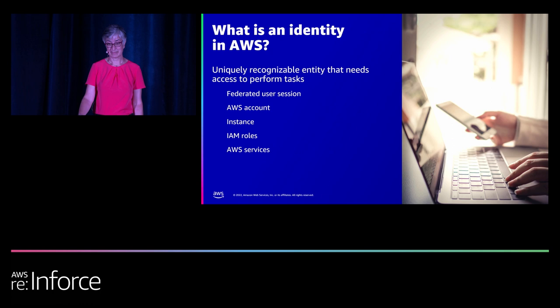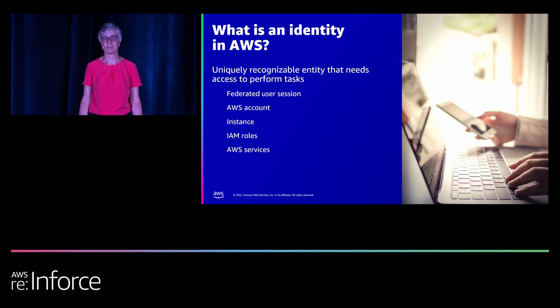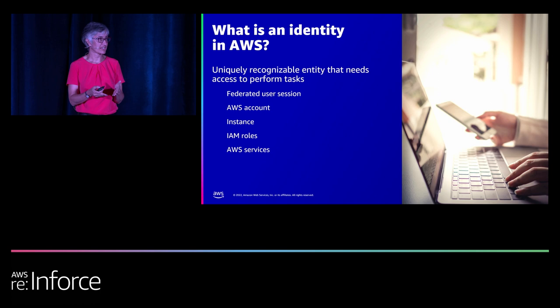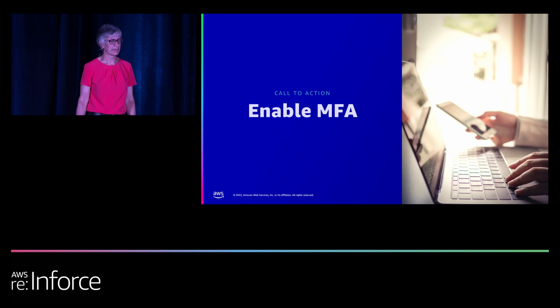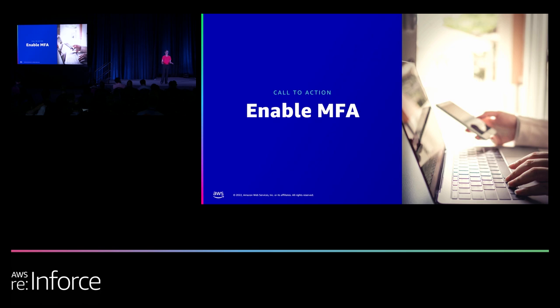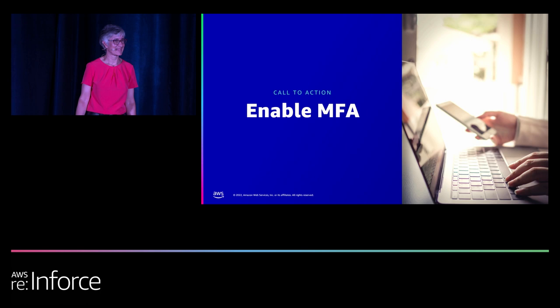What is an identity in AWS? You have many types of identities who need to do things in AWS — people, applications, and AWS services that may be acting on your behalf. Identities in AWS are people or applications that can make a request for an action or operation on an AWS service, resource, or application. We sometimes use the word "principal" to refer to any entity that authenticates in AWS and makes requests. The most important best practice for all identities: enable multi-factor authentication to strengthen the security for your credentials.